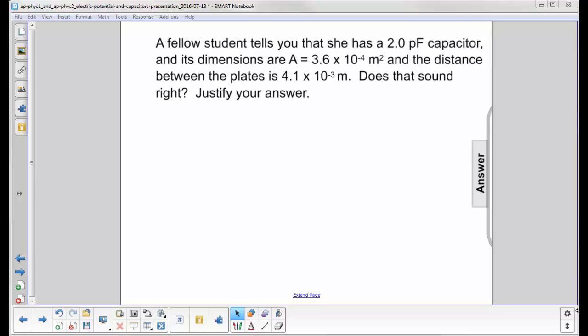A fellow student tells you that she has a 2.0 picofarad capacitor, and its dimensions are the area is 3.6 times 10 to the minus 4 meters squared, that's the area of the plates, and the distance between the plates is 4.1 times 10 to the minus 3 meters. Does that sound right? Justify your answer.